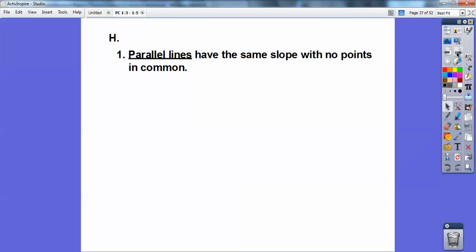Parallel lines have the same slope with no points in common. Perpendicular lines have opposite reciprocals. So for example, if I knew the slope of one line was 2/3, then the perpendicular line would be to flip it and change the sign. So it would be negative 3/2.